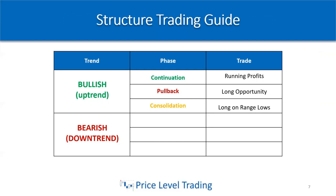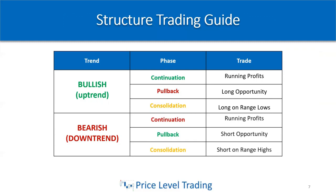Now let's look at the bearish structure trading guide — being in a downtrend. The continuation phase is the same: run profits. The pullback in this case is a move up, presenting a short opportunity or retesting previous support now acting as resistance. We usually consolidate there, and we want to short on the range highs when consolidating, with a stop above, for a continuation lower to run our profits and get paid.